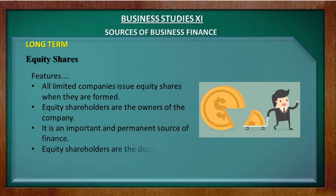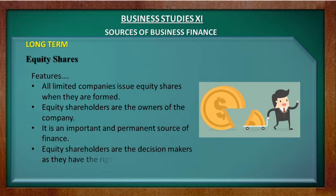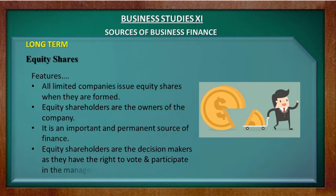Equity shareholders are the prime risk takers as they get a return on their investment only after all external fixed costs — in the form of taxes, interest on borrowed capital, etc. — are paid. They are also called residual owners, and as decision makers, they have the right to vote and to participate in the management of the business.